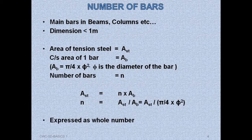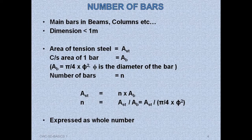Number of bars are always expressed as whole numbers, so after the calculation we have to round it off to the next higher whole number. We can then say 'n number of Φ mm dia bars,' meaning we have converted Ast in terms of bars of diameter Φ and number n.